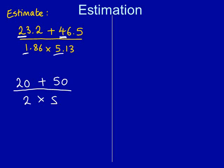So we've now got 20 plus 50 all over 2 times 5. To answer this question, we must work out the top and the bottom of the fraction separately. On the top, we have 20 plus 50, which gives us 70. On the bottom, we have 2 times 5, which gives us 10. So 70 divided by 10 gives us the answer of 7.